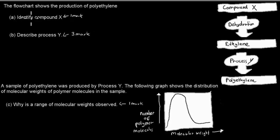So the question here is, the flowchart shows the production of polyethylene. Identify compound X with one mark and describe process Y with three marks. Compound X here, through dehydration, goes to ethylene. Ethylene per process Y goes into polyethylene. So this is the flowchart.